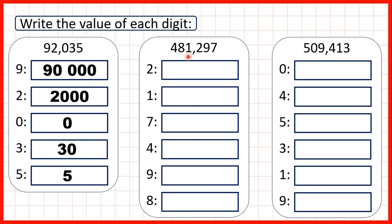Now we have 481,297. We need to write the value of the digit 2. We can see that that's in our hundreds, so it represents 200. The 1 is in our thousands, because the thousands digit is always the fourth digit from the right. Or if we have a comma in a number, the thousands digit is the digit before the comma. So that's 1,000 — 1 followed by 3 zeros, because we have 3 digits after the 1 in our number. The 7 is in our ones, so it just stands for 7.